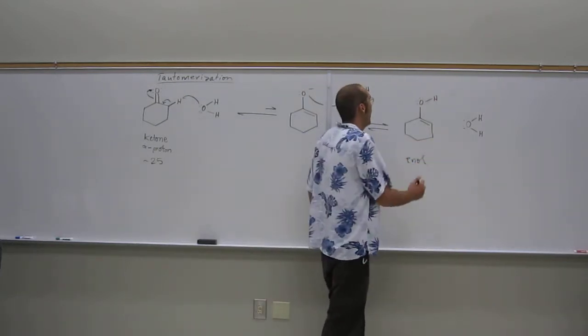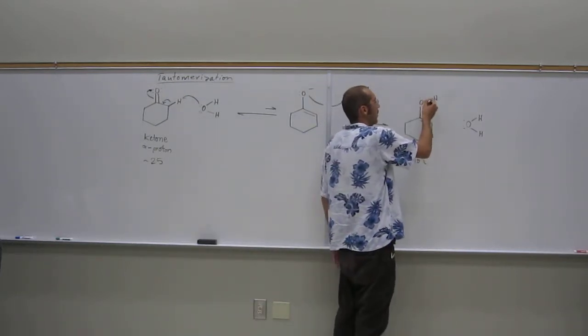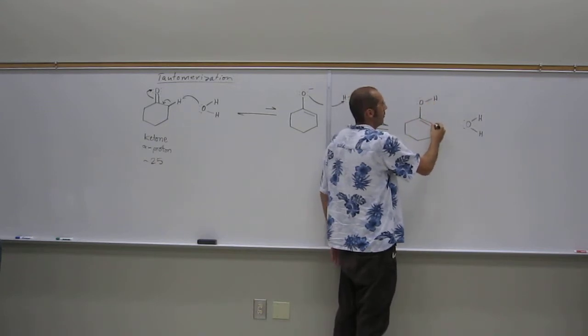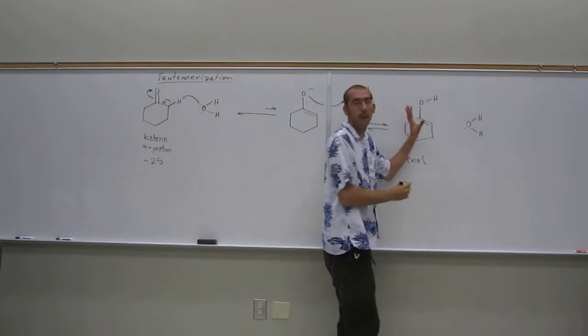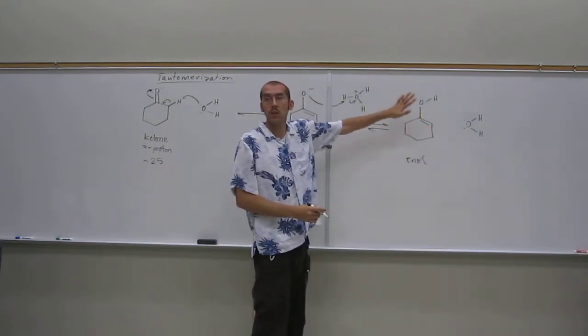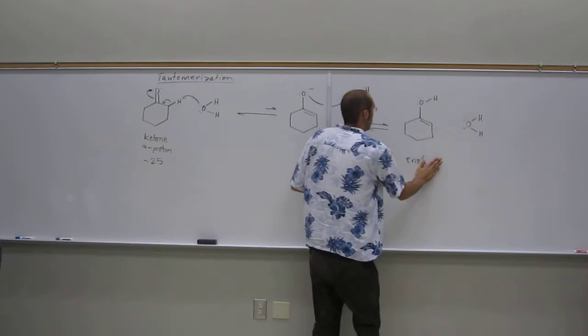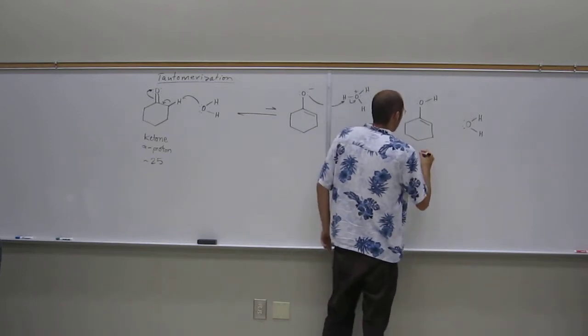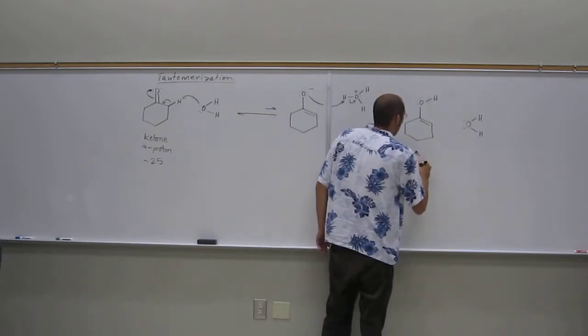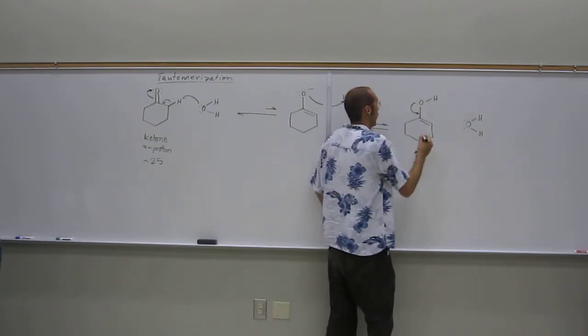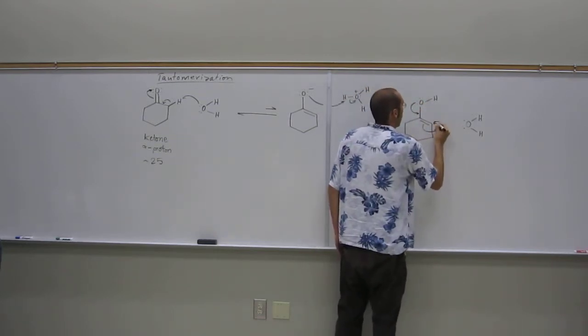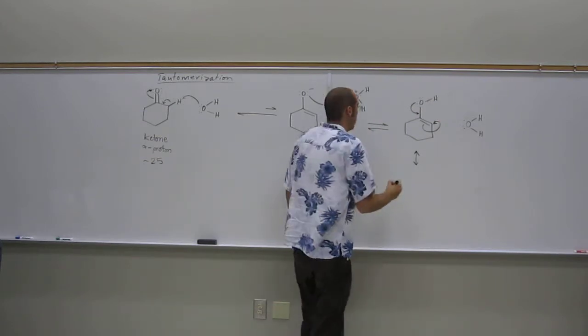And what will happen is that eventually what you can do is make this carbon here to be a nucleophilic carbon. Because if you think about the resonant structure of this molecule, right? So the resonant structure of an enol, if we pull these electrons down like that, and those electrons there like that, that gives you...